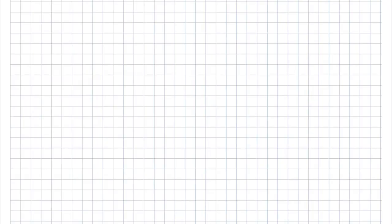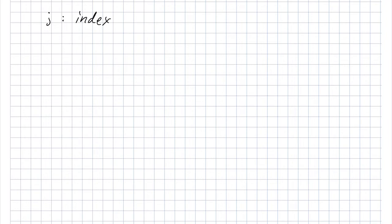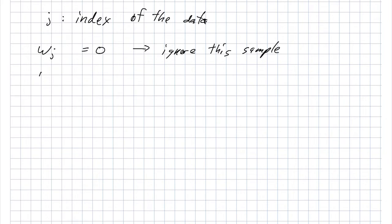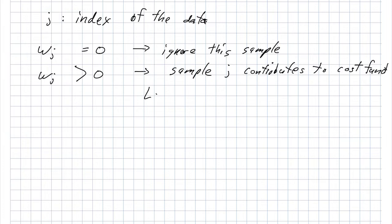Let's look at some mathematics, using the notation from our prior videos. I'm going to use j to index our data, and we're going to introduce this new concept of weight. So wj means the weight assigned to a particular element in our data set. When weight is equal to zero, we're going to ignore this training sample. And when wj is positive, sample j contributes to the cost function — in particular, larger wj means it contributes more.